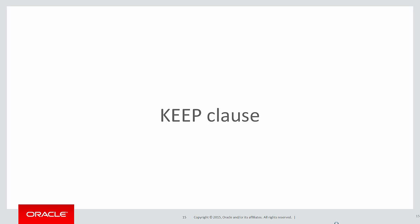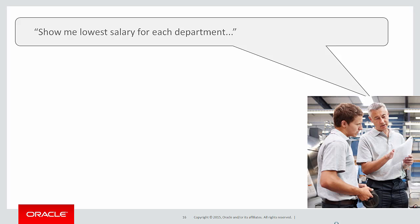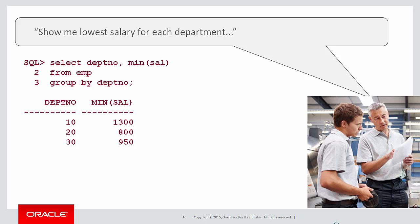Let's look at another example today — it's called the KEEP clause. We'll build this up with an example. Here is the first and most simple requirement, which doesn't even require analytics: show me the lowest salary for each department. That is very simple SQL: SELECT department_number, MIN(sal) FROM employee table GROUP BY department_number. And now we have for each department number the employee's minimum salary.